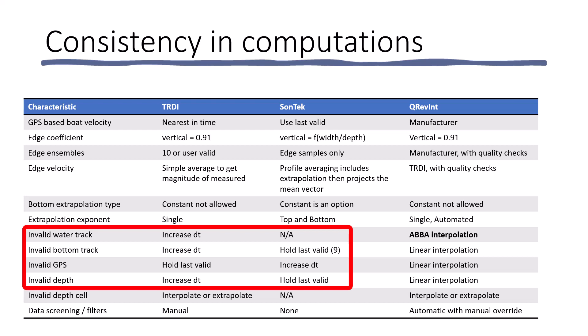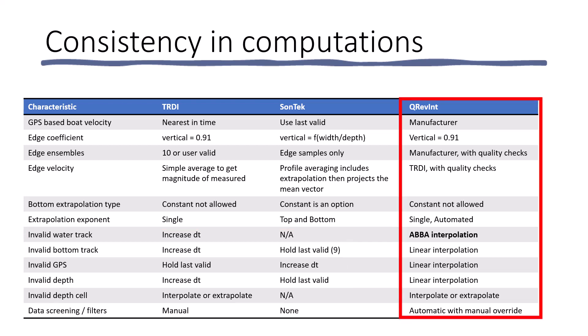If the boat velocity was computed with GPS, TRDI, instead of increasing DT as they had for water track and bottom track, they would hold the last valid GPS velocity until the next valid GPS velocity was obtained. Conversely, Sontek, with bottom track, they were holding the last valid, if it was from GPS, they would increase delta t. So, you can see that neither manufacturer was consistent with their own software, and in fact, they did almost the exact opposite of what the other manufacturer did in the same situation. So, the idea with QREVINT was to provide a consistent set of computational algorithms, so that you would get the same discharge, no matter if you collected the data with a TRDI instrument or a Sontek instrument.